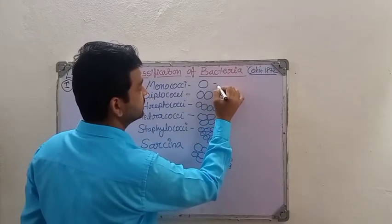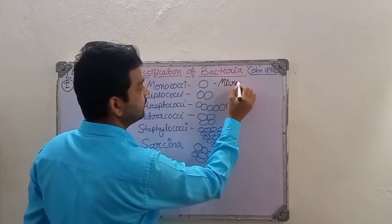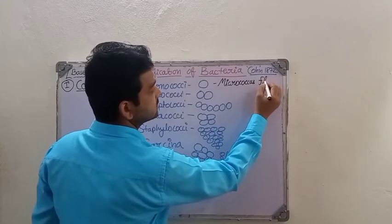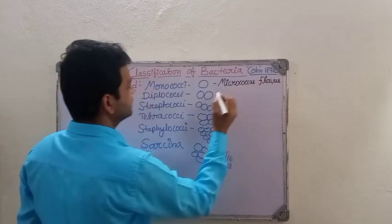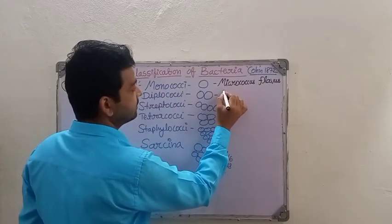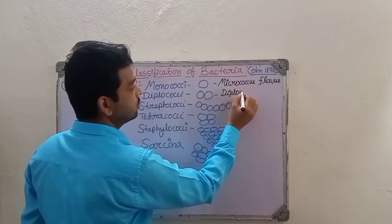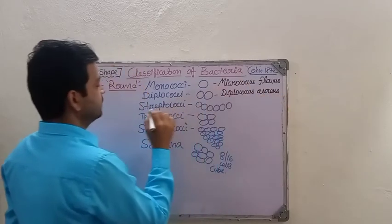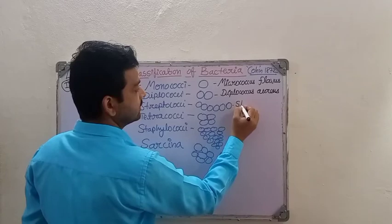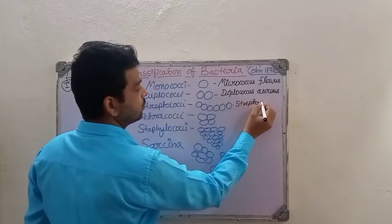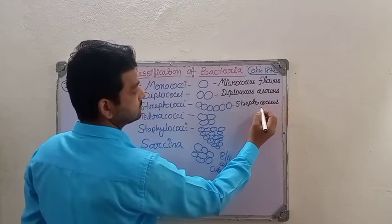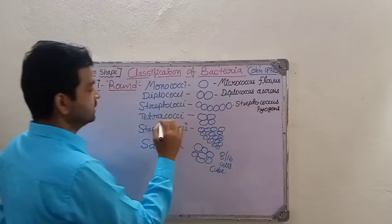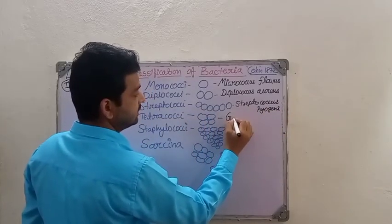For the examples: monococci — we can take the example of Micrococcus flavus. For diplococci, the example is Diplococcus pneumoniae. For streptococci, the example is Streptococcus pyogenes.